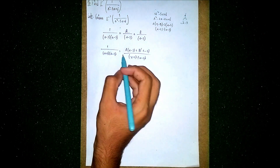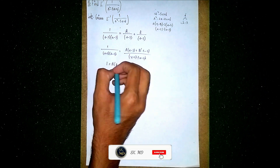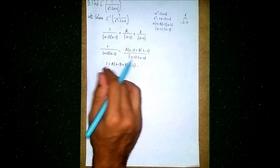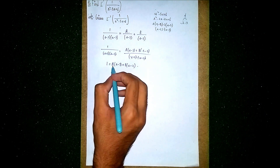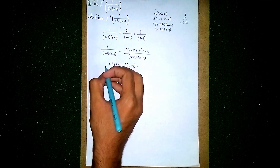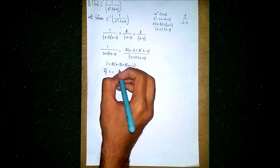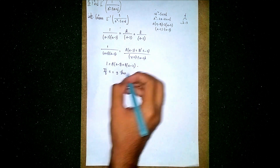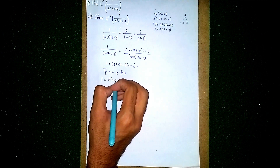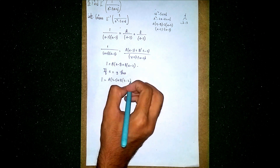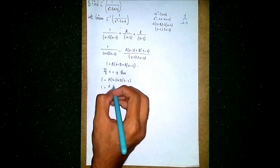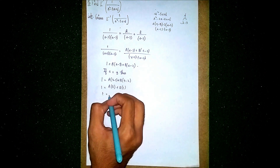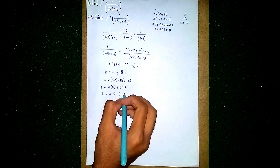Now we have to find the values of A and B. To eliminate any variable, we substitute suitable values. If s equals 3, then 1 equals A into 3 minus 3 plus B into 3 minus 2. So 1 equals A into 0 — the A value is eliminated — plus B into 1. Therefore 1 equals B, so B equals 1.